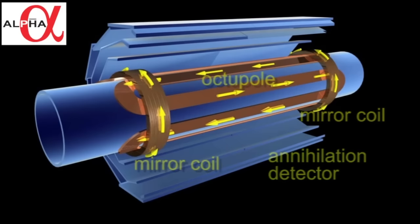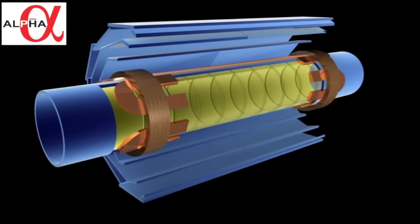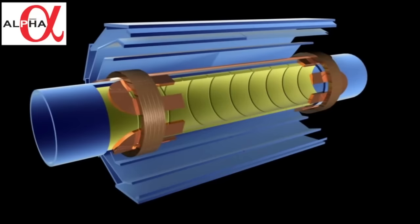We now open up the system to have a look inside. Inside the vacuum chamber, we have electrodes. These electrodes are essentially metal cylinders that can be charged to different potentials to manipulate the charged particles along the axis.